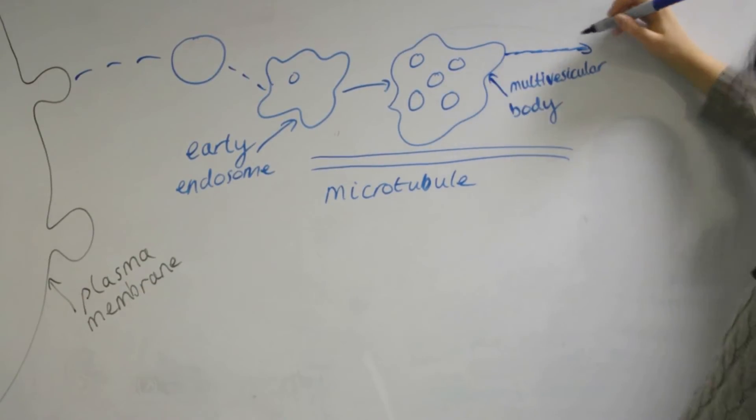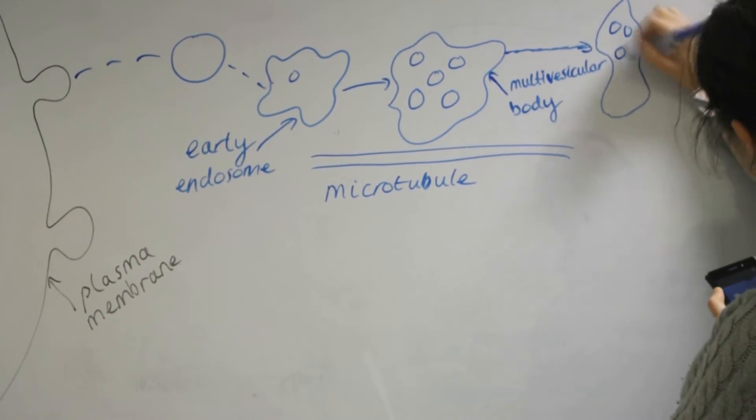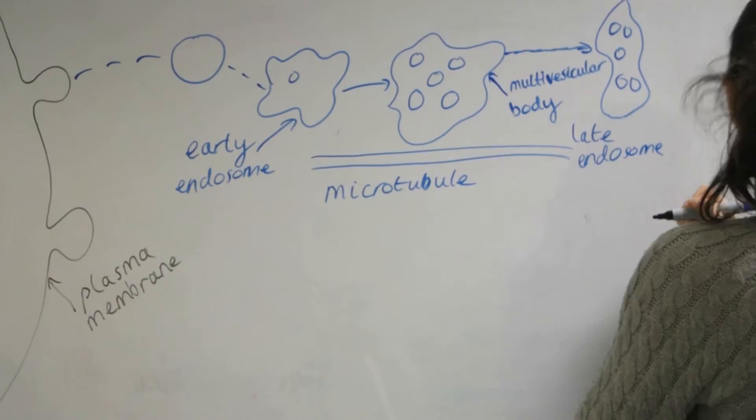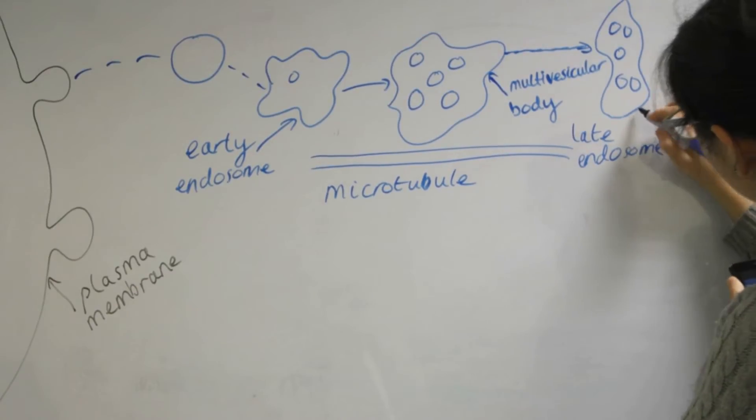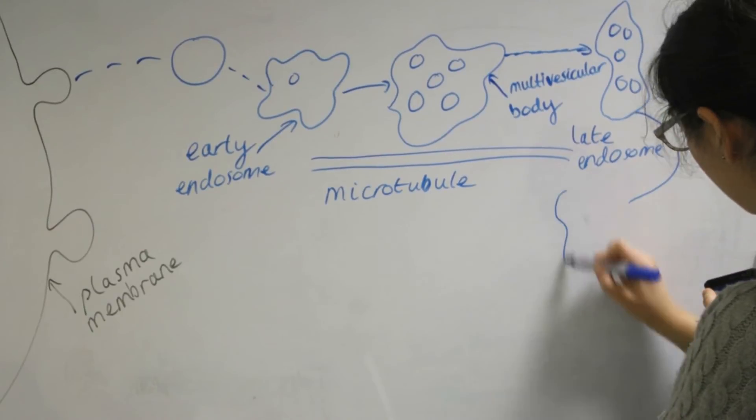This multivesicular body then travels along the cytoskeleton of the cell towards the lysosomes. As the multivesicular body travels along the microtubules of the cell it matures and its pH decreases and it becomes a late endosome.